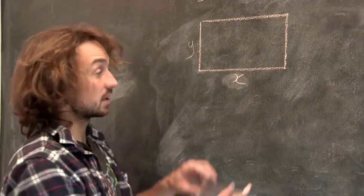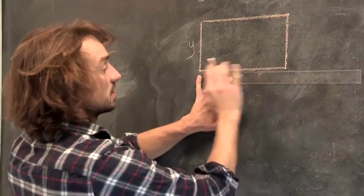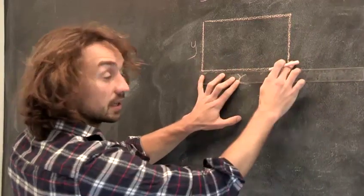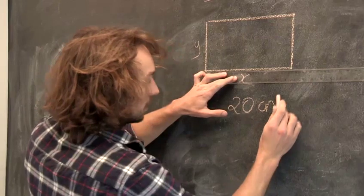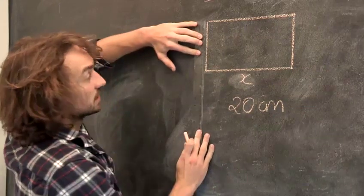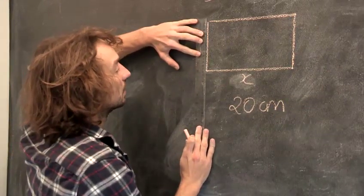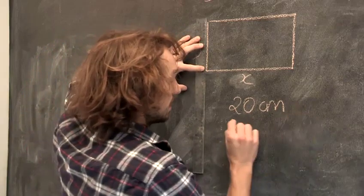You take a ruler and measure this length here. This length here, let's say that's 20 centimetres. Then you measure this length here, your y. This one here, that's 10 centimetres.